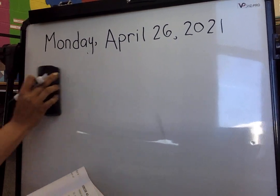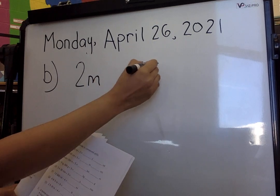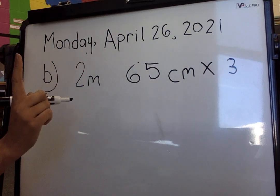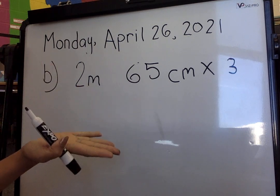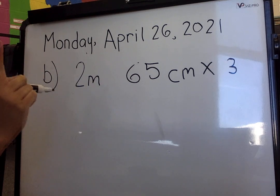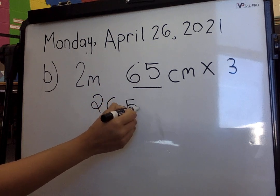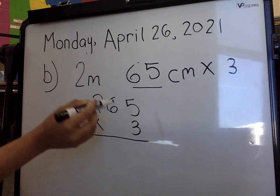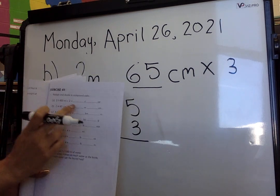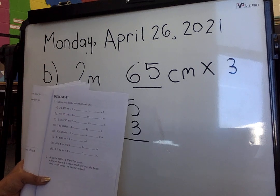Let's look at question B. Question B says 2 meters and 365 centimeters times 3. We can stack. Now 1 meter equals 100 centimeters, so 2 meters equals 200 centimeters. We have 200 centimeters and 65 more centimeters, so we stack 265 times 3. The number showing up in the hundreds column will be our meters, because meters are in hundreds, just like liters were in thousands.